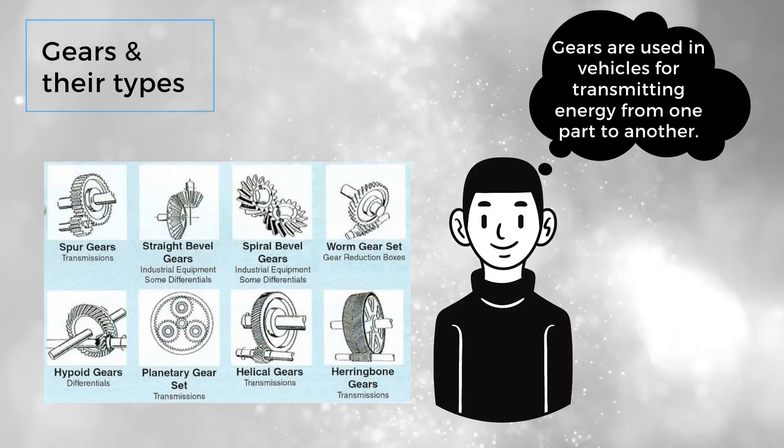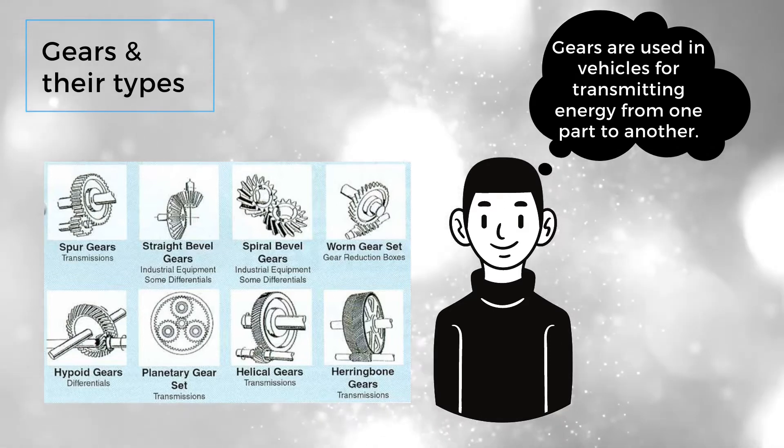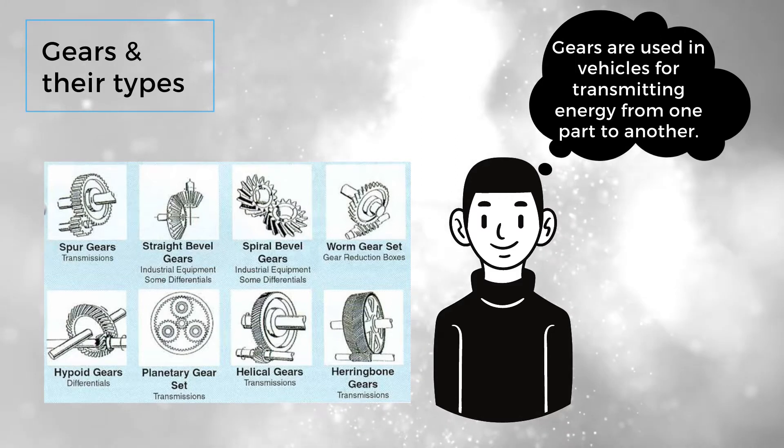Gears are used in vehicles for transmitting energy from one part to another. Some of the gear types are spur gear, straight bevel gear, spiral bevel gear, worm gear set, hypoid gear, planetary gear set, helical gear, and herringbone gear.